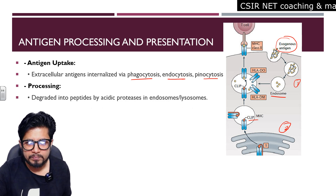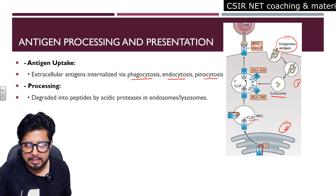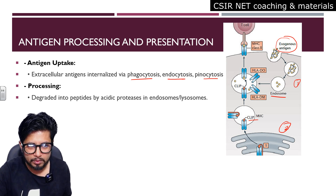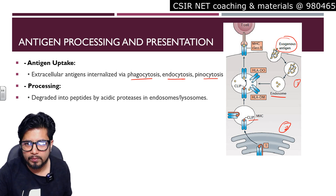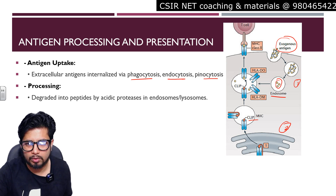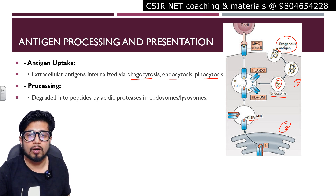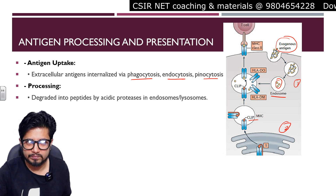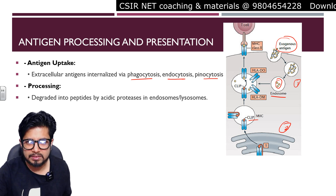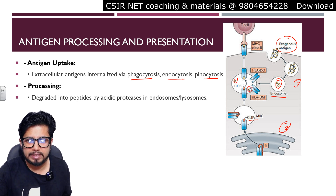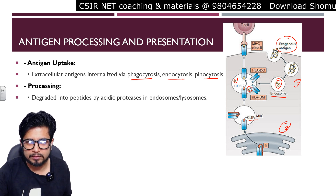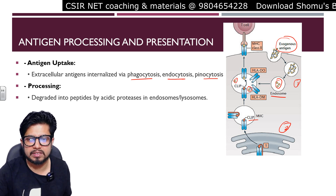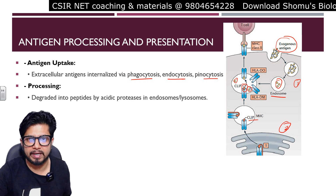The endosome fuses with the MHC-containing vesicle — this is called endolysosome fusion. Once fused, the endosomal content, which is fragments of bacterial or pathogenic peptides, is released into the vesicle. The number of pathogenic fragments is greater than the number of CLIP molecules, so the pathogenic fragment substitutes CLIP and binds to the peptide binding cleft.